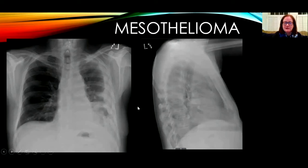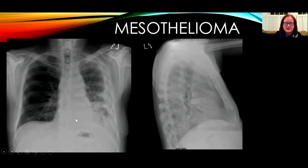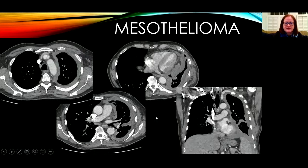This patient with progressive shortness of breath over a couple of years had worked in the building industry and was exposed to asbestos. The left hemithorax is reduced in volume, which is characteristic of mesothelioma. There is also nodular pleural thickening extending over the medial aspect as well as laterally. CT shows nodular pleural thickening extending over the mediastinal surface, into the pleural fissures, and there is also lymph node enlargement in the mediastinum. On the coronal view there is a decrease in the size of the hemithorax.